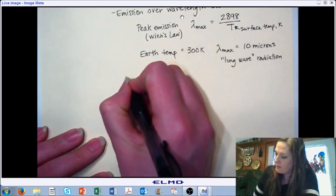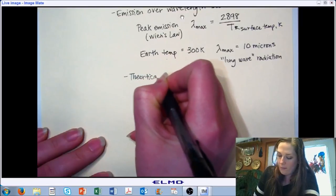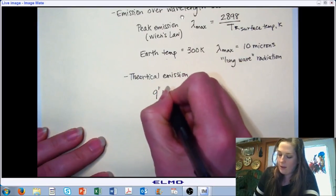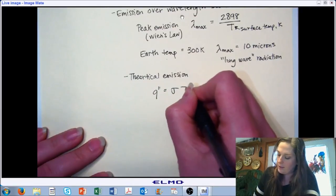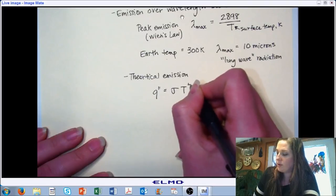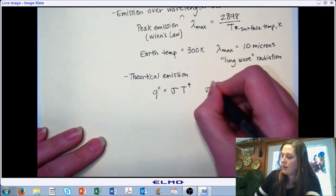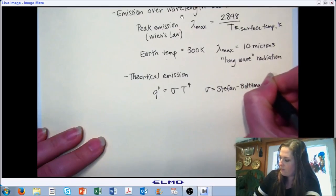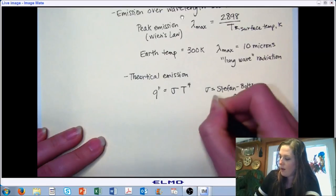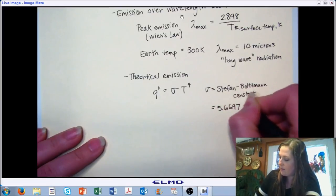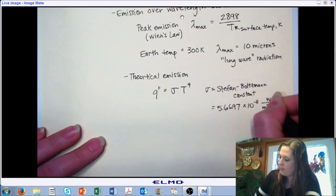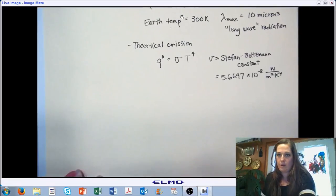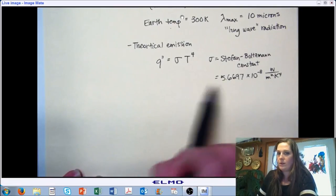In theory, the amount of energy leaving a surface can be predicted by the Stefan-Boltzmann constant times the surface temperature in Kelvin raised to the 4th power. The Stefan-Boltzmann constant is 5.6697 × 10⁻⁸ W/m²·K⁴. There's a measure of energy, area, and temperature factored in, and when combined with surface temperature, you end up with watts per meter squared.